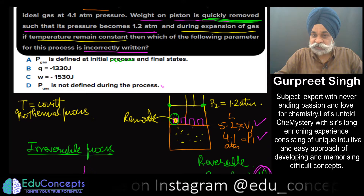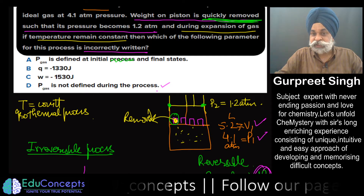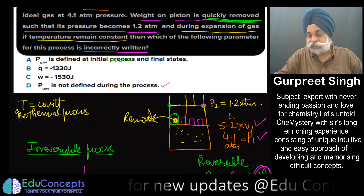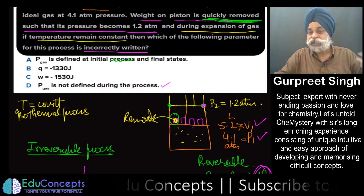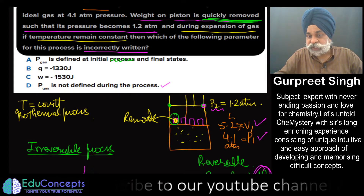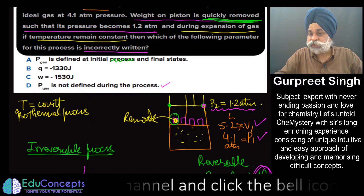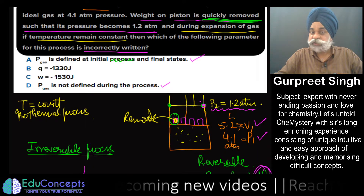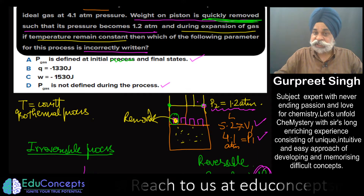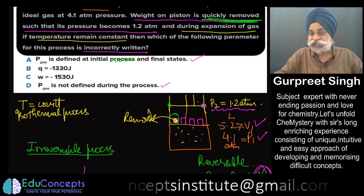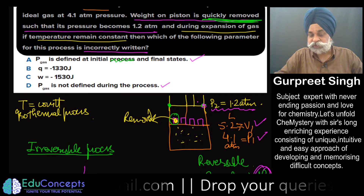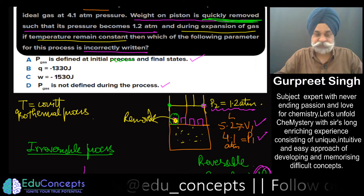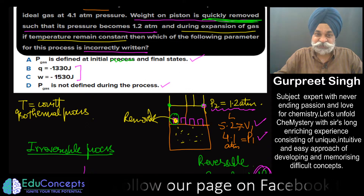So this statement — 'the pressure of the gas is not defined during the process' — is beautifully and perfectly written. It would be defined only once the piston stops and mechanical equilibrium is achieved, at which point the pressure is defined as 1.2 atm. During any irreversible process, pressure is defined only at the initial and final states; during a reversible process it is defined at every point of progress.